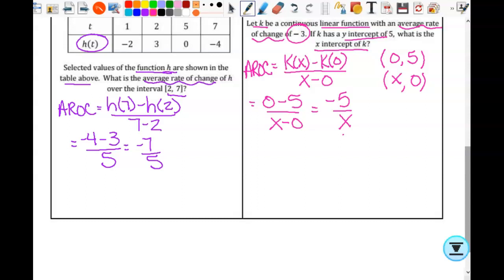So that means that negative 5 is equal to negative 3X, and X is equal to 5 thirds. We're good?